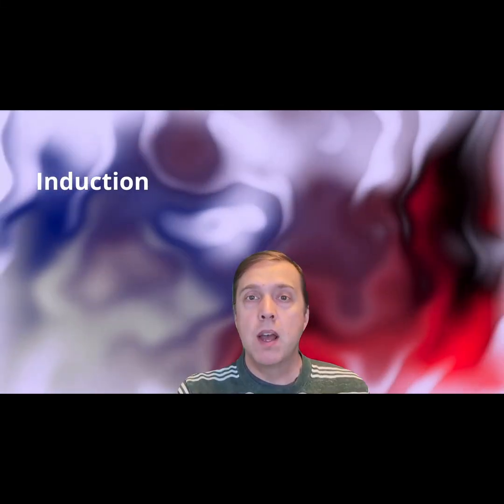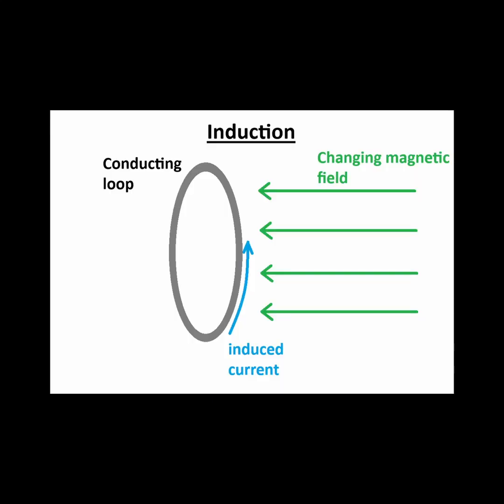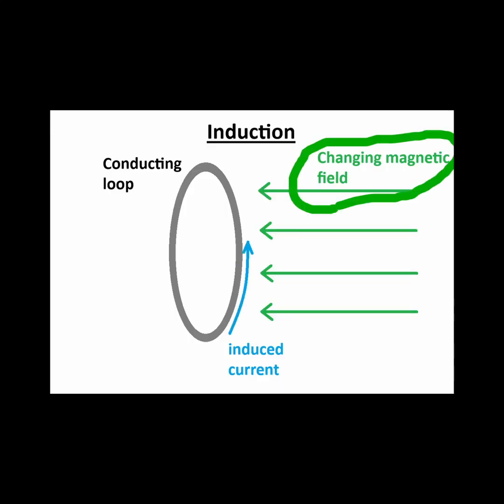The concept of induction — but what exactly is going on? A current in a loop is induced if there is a changing magnetic field passing through the loop. It's not the amount of magnetic field passing through the loop that matters, but rather the rate of change of that magnetic field.